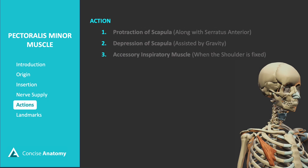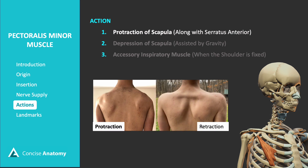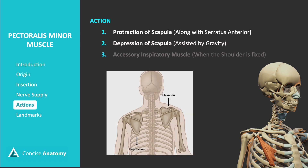The pectoralis minor has several key actions. It protracts the scapula in coordination with the serratus anterior, moving it forward along the chest wall. Additionally, it assists in depressing the scapula, with gravity aiding this action.